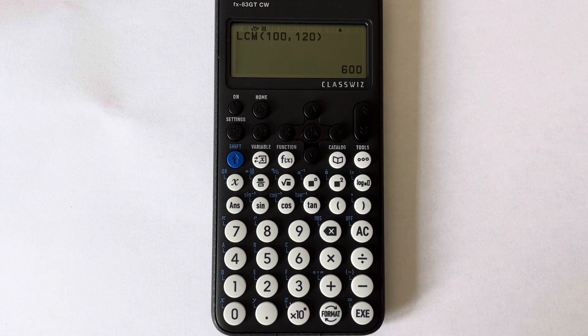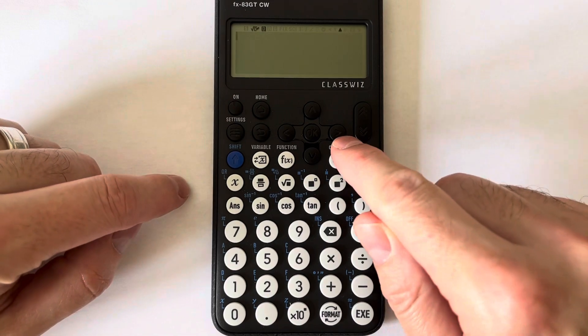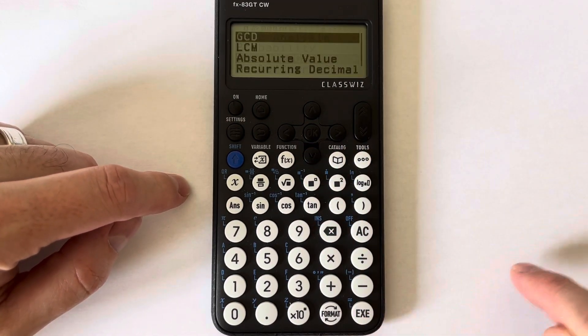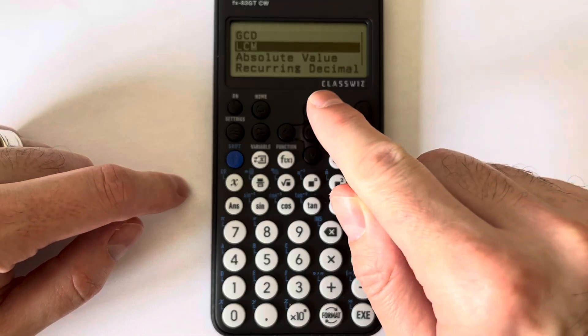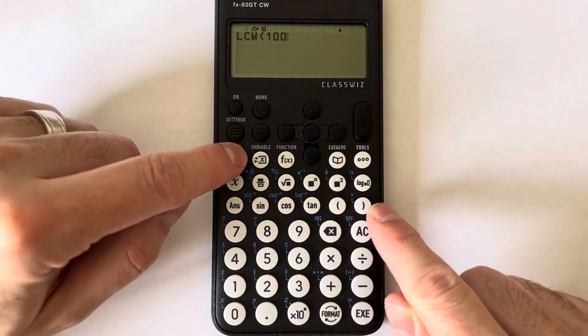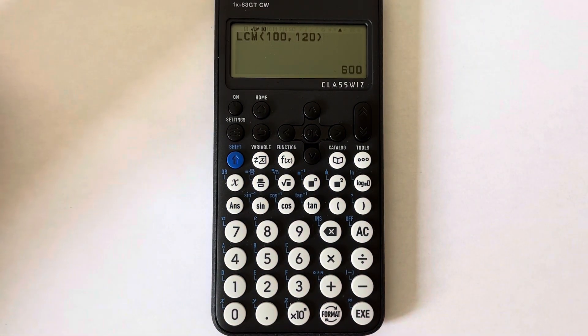Let's do that one more time. Press AC. Then catalogue, scroll down to numeric calc, scroll down to lowest common multiple. Enter 100, shift, right bracket, 120, close your bracket, and execute.